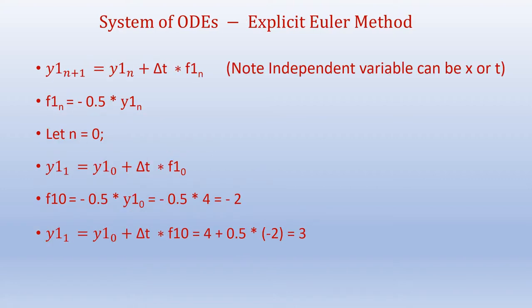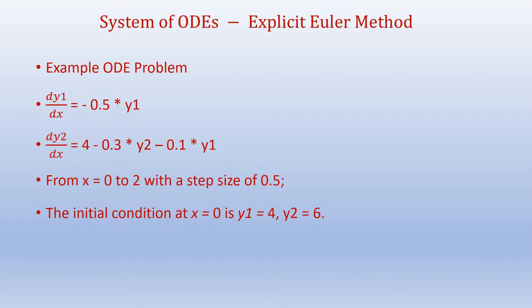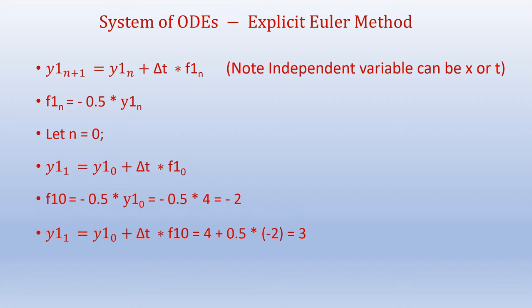So y1_{n+1} = y1_n + Δt × f1_n, where f1_n = -0.5 × y1_n. These are the explicit Euler equations. If we let n = 0, then y1_1 = y1_0 + Δt × f1_0.